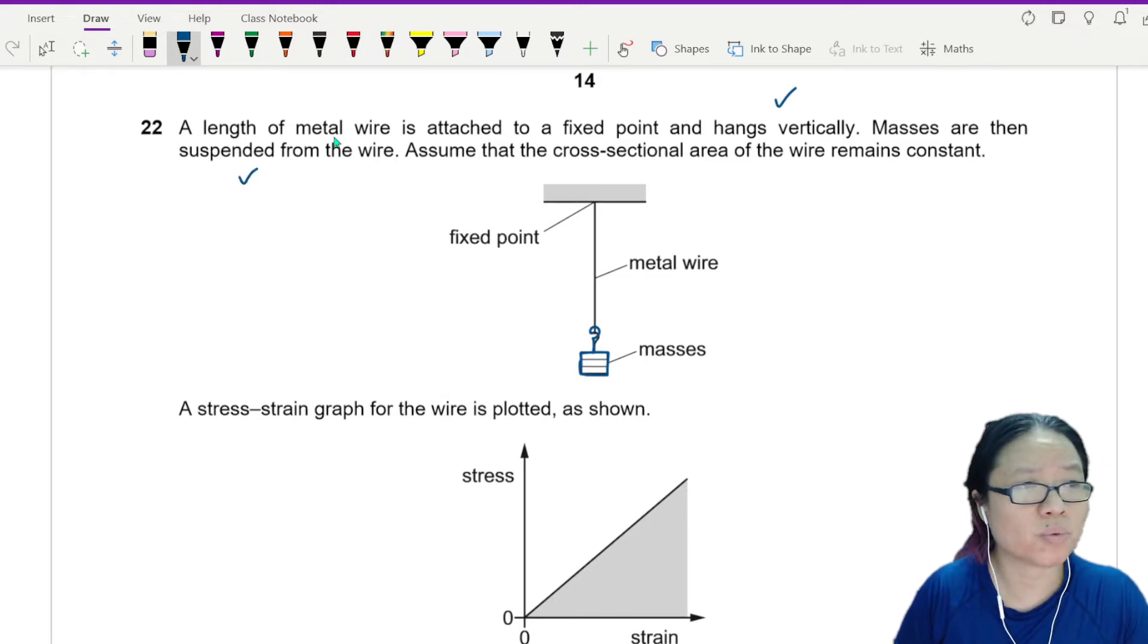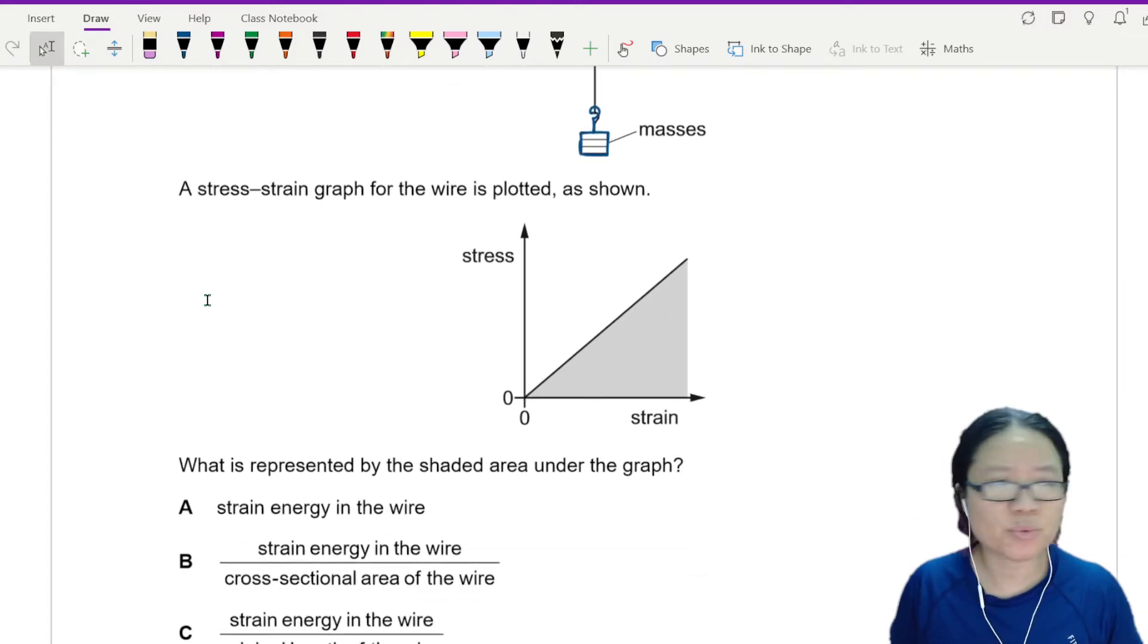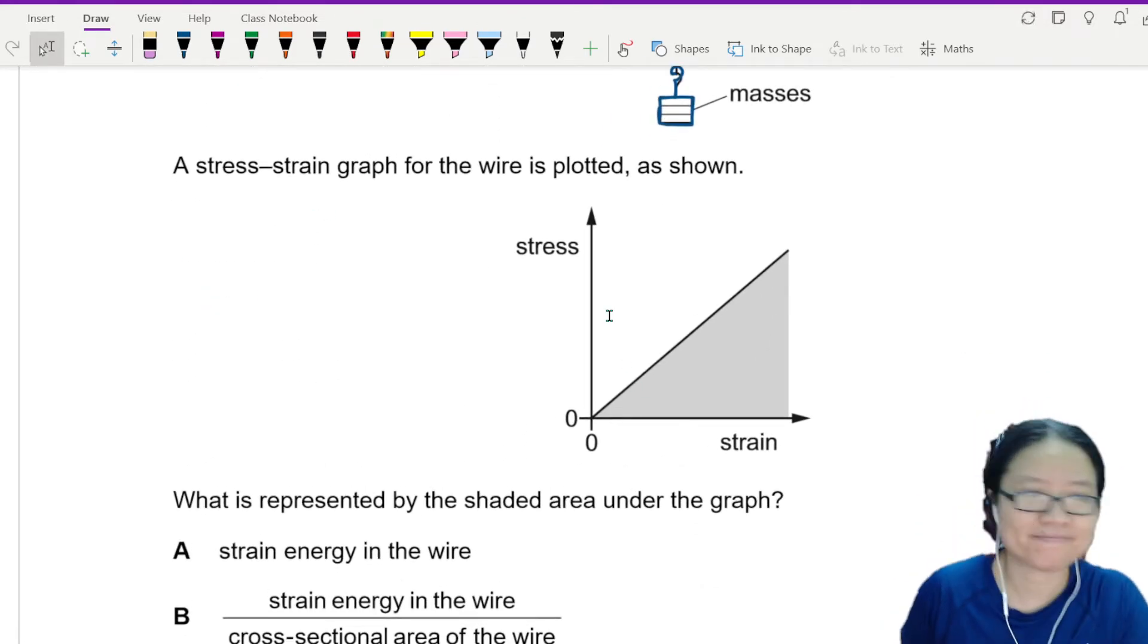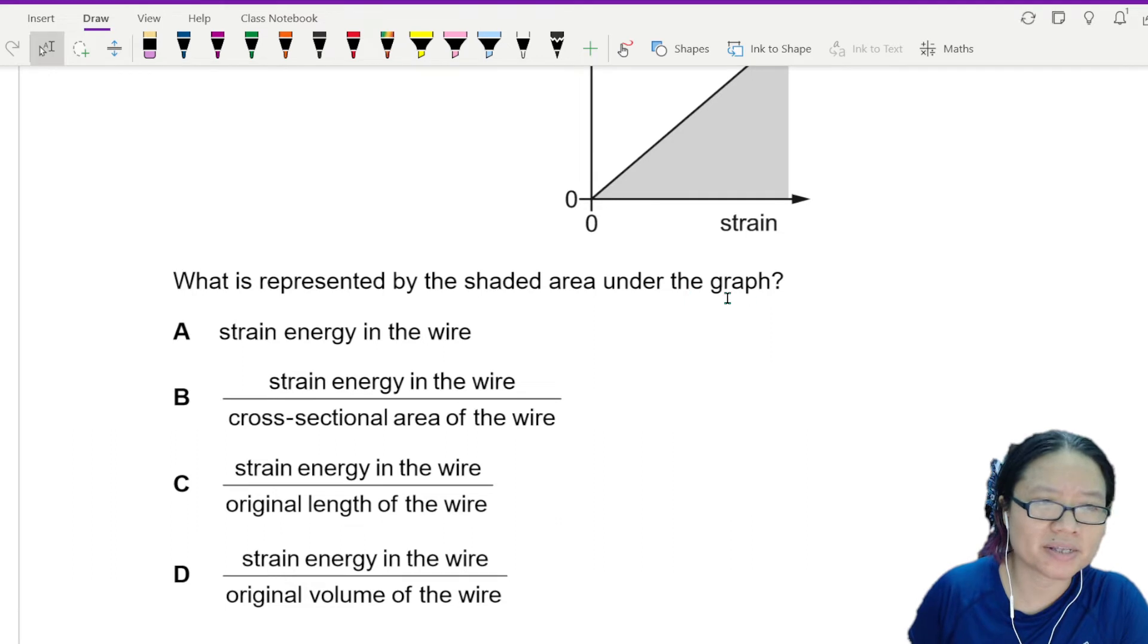Masses are then suspended from the wire. Assume the cross-sectional area of the wire remains constant, and we have a stress-strain graph. What is represented by the shaded area?